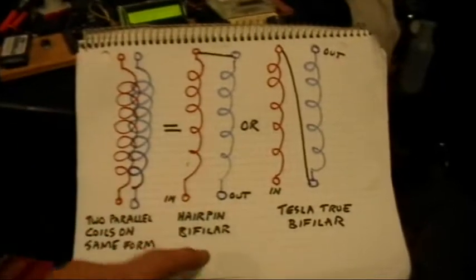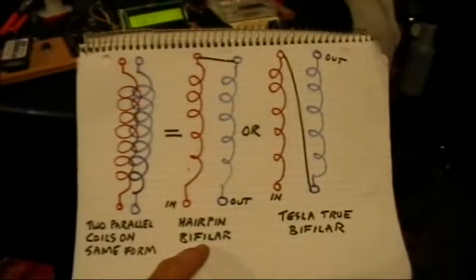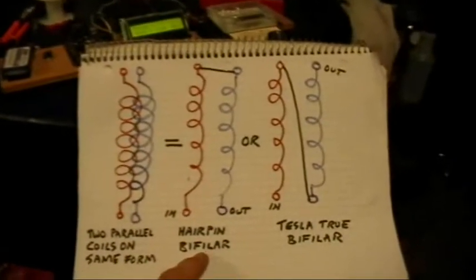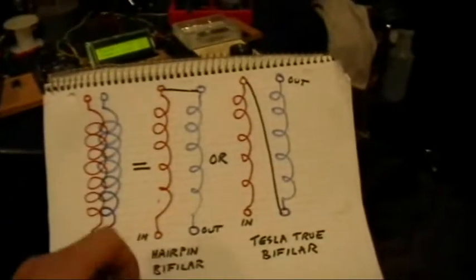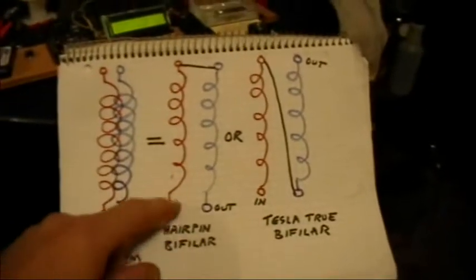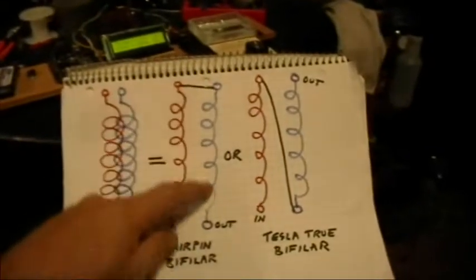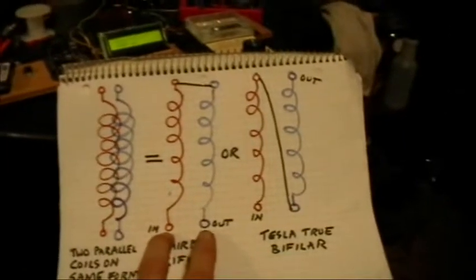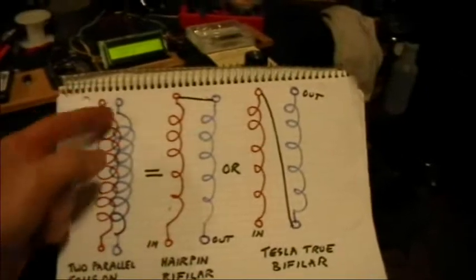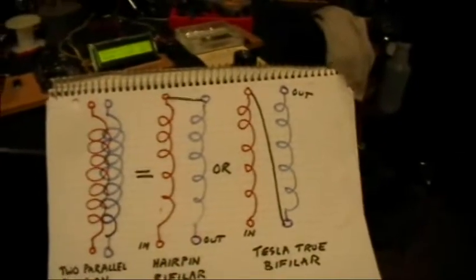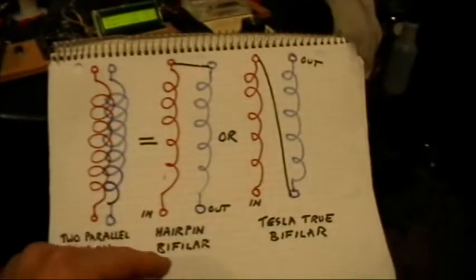Now there are a couple of different ways that we could hook up those two wires together. We could do what we call a hairpin bifiler, so that the coils are in strict series. They're in series either way, but in this way, we take the top end of one coil, hook it to the top end of the other coil, and then take the two bottom ends as our inputs and outputs. So the current goes up one coil, and then comes back down the other coil, so at every place along the coil, you have two oppositely directed currents.